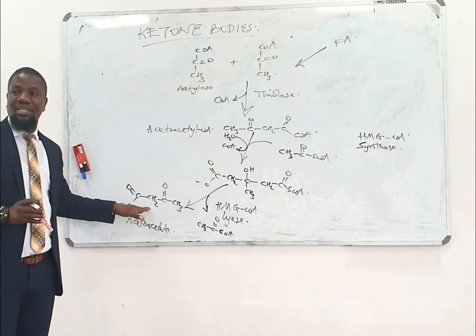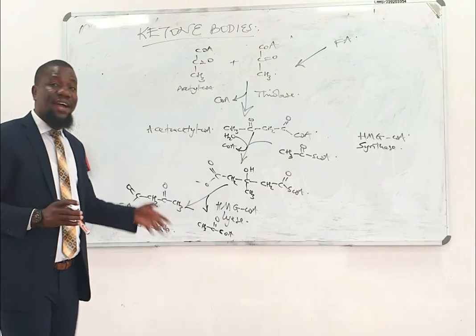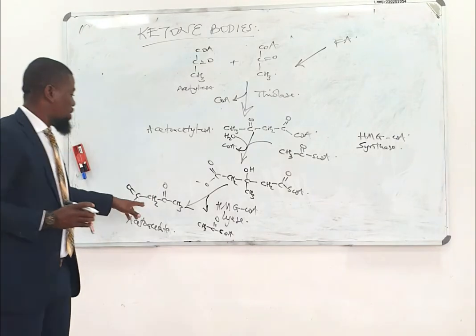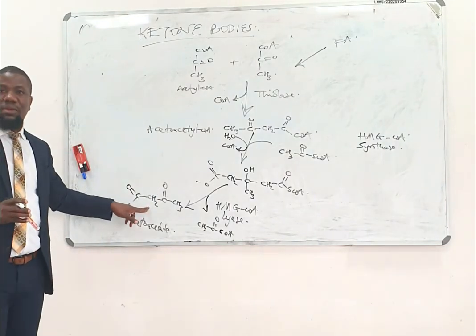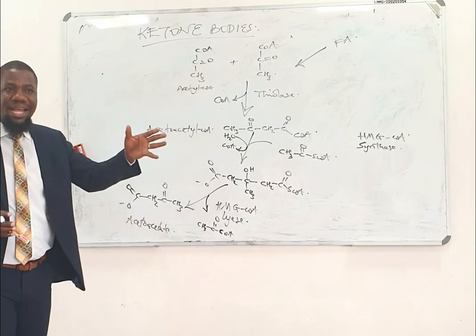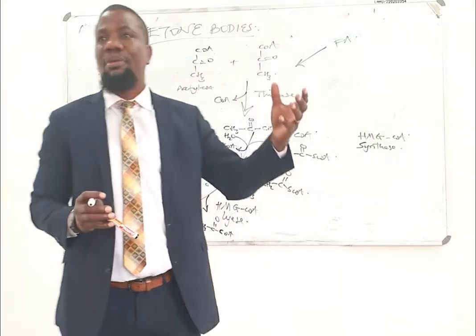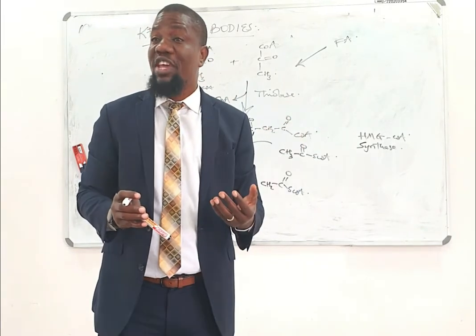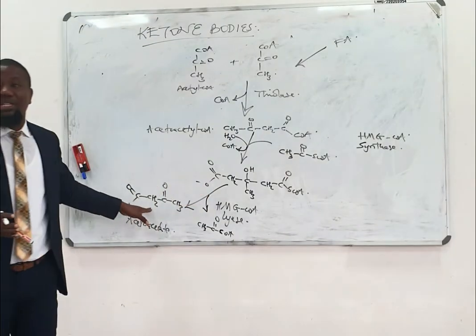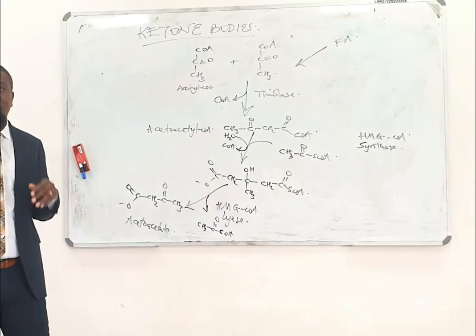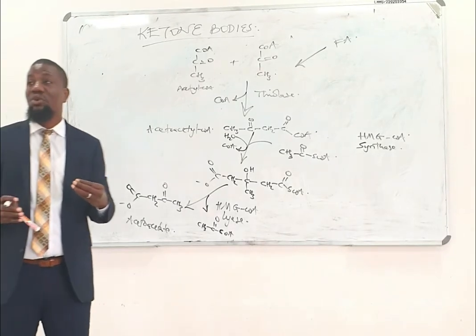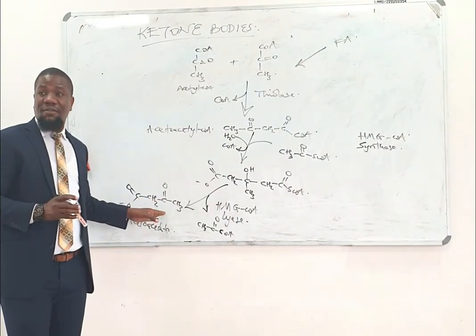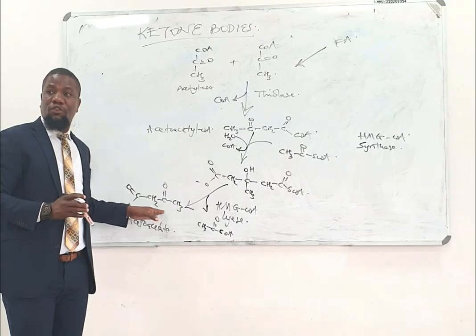Acetoacetate has a carboxyl group, which makes it acidic and polar. Acetoacetate is the first ketone body produced, and it is a functional ketone body which can be used in peripheral tissue for production of energy. It will go into the blood, be carried to peripheral tissue, be used to produce acetyl-CoA, and hence be used as a source of energy. Ketone bodies become a very useful source of energy for most tissue, especially in circumstances of starvation.